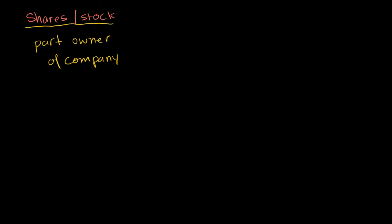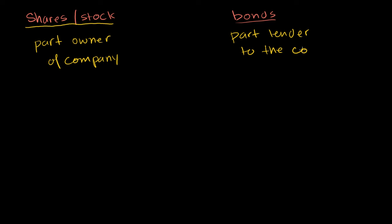Just to contrast this with bonds, because they're often used in the same phrasing — 'I'm going to go buy some stocks or bonds.' With bonds, you become a part lender to the company. For example, if you buy a face value bond of $1,000, and there are 1,000 people who do that, each of you are lending $1,000 to the company, so collectively you're lending a million dollars. With stock you're owning the company; with bonds you're lending to the company.